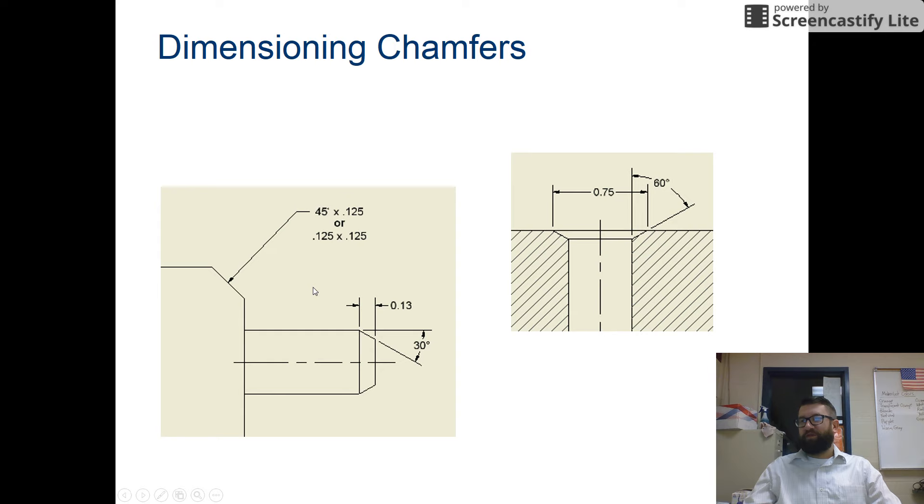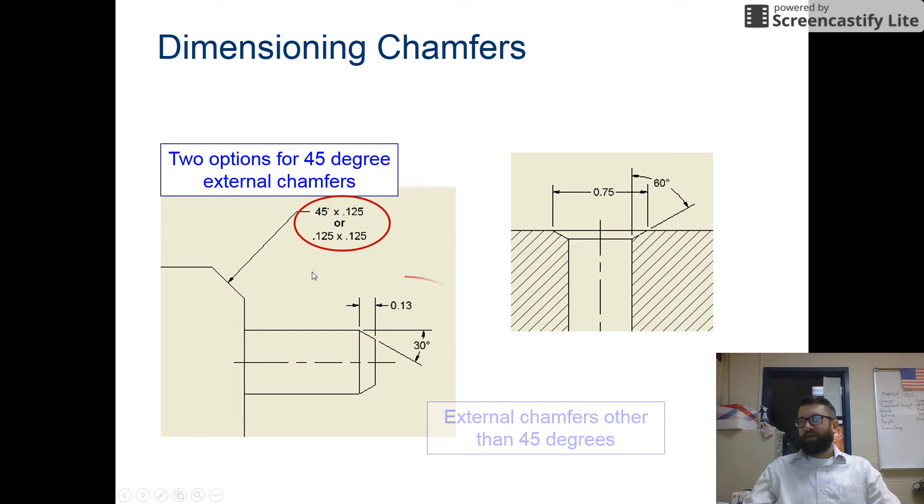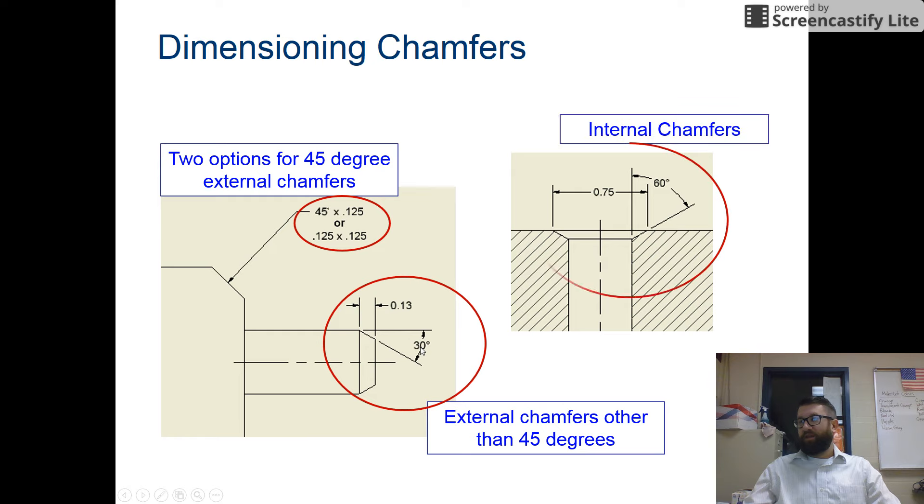So sometimes we have some chamfers. Two options for 45 degree external chamfers. One, you can say 45 degrees times 0.125, or you can say 0.125 times 0.125. External chamfers other than 45 degrees will specify the distance and then specify an angle for that. If they are internal, we'll give the overall width and then an angle for these as well. Again, you're going to have to refer back to this slide and this presentation as you go through the activity.